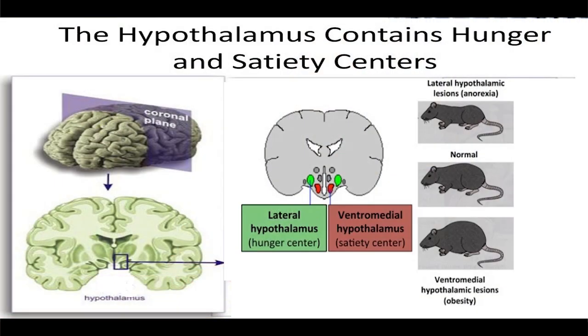First, let us discuss the functions of the major control headquarters of the limbic system — the hypothalamus — which plays an important role in controlling thirst, hunger, and many of the emotional drives. Stimulation of several areas of the hypothalamus causes an animal to experience extreme hunger, a voracious appetite, and an intense desire to search for food. One area associated with hunger is the lateral hypothalamic area.